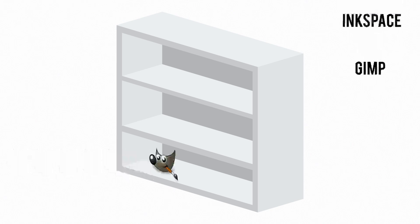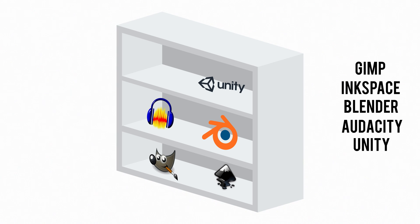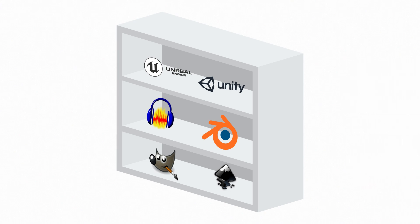In summary, for art use GIMP, Inkscape, or Blender. For sound, use Audacity. And for an engine, use Unity or Unreal, depending on your needs. This list is by no means exhaustive, but enough to get you started. If you have a favorite free tool that you use for game dev, let us know in the comments.